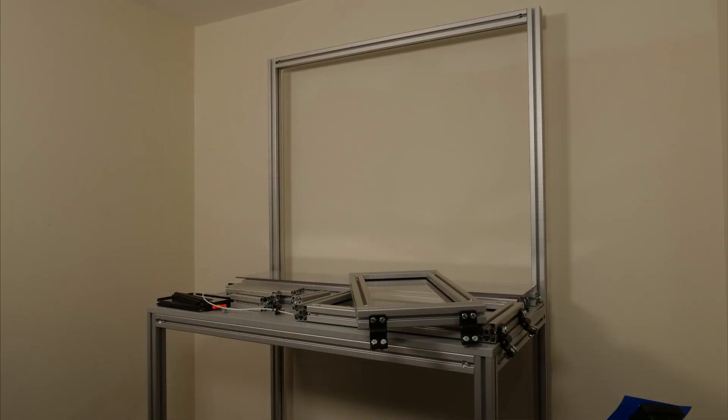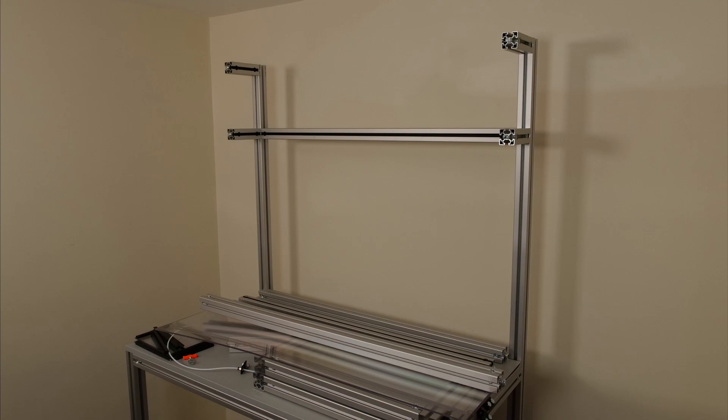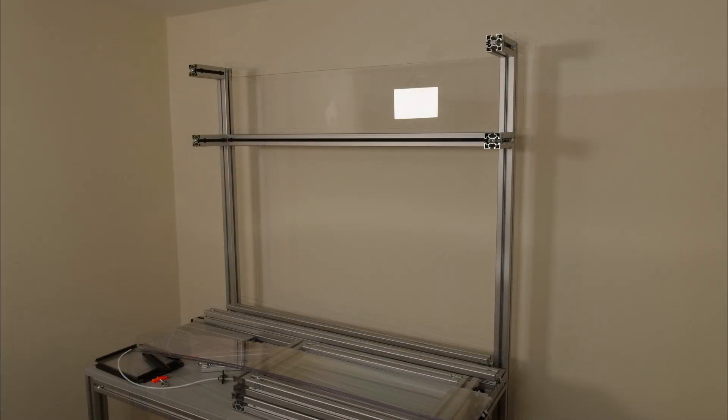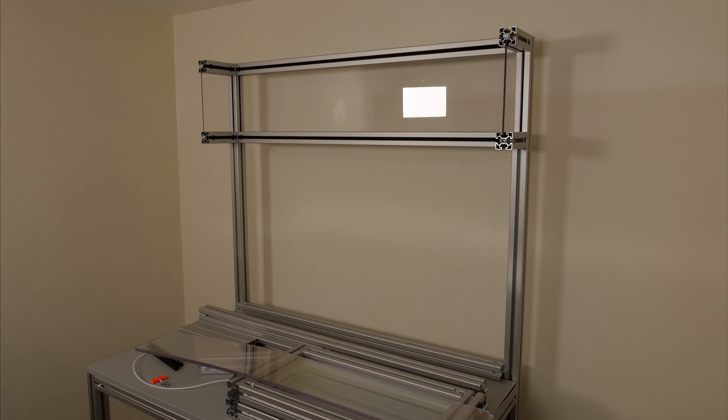We start by assembling some of the extrusions for the enclosure to the frame and adding the seal profile into the extrusion. Next we fit panels into the areas of these extrusions that won't be accessible later on. We can then enclose these areas where we fitted panels with the remaining extrusion and sealing profile to complete an open box.